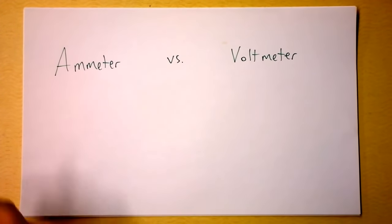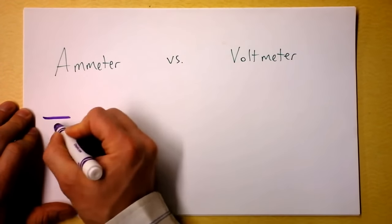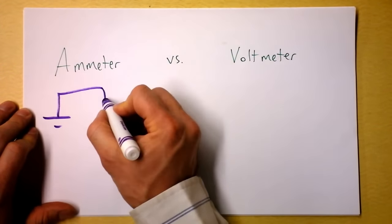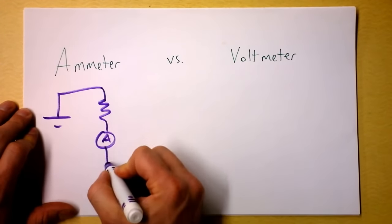It's the ultimate showdown, ammeter versus voltmeter. Ammeters are designed to measure current, so if you have yourself a battery and a resistor and you want to know the current through the circuit, you put in an ammeter.